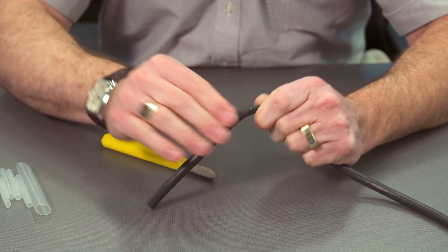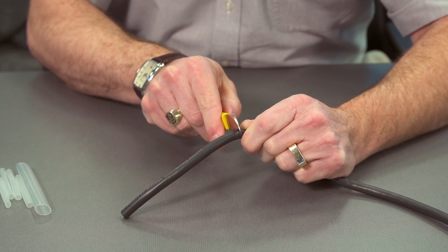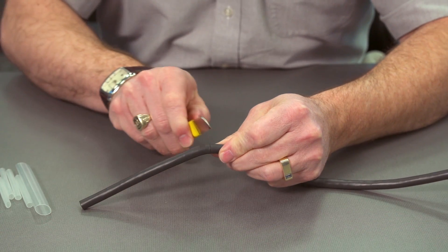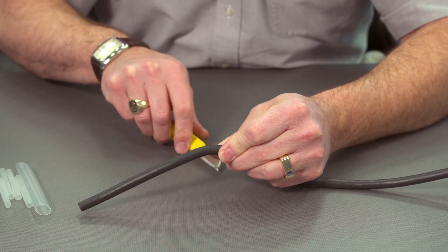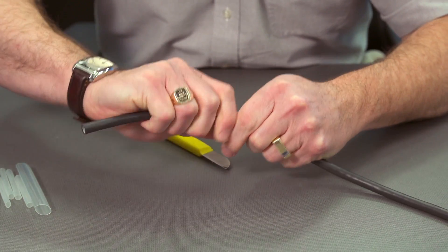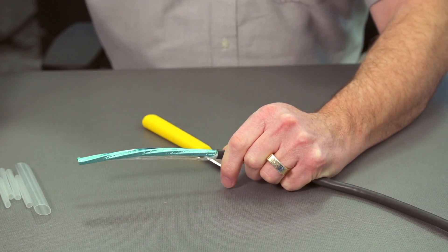If it's still a little bit snagged, we can see if we've got a little catch. Look on the other side. Want to be careful when you do this not to cut the cables inside, so it's just to cut the jacket. Remove the jacket.